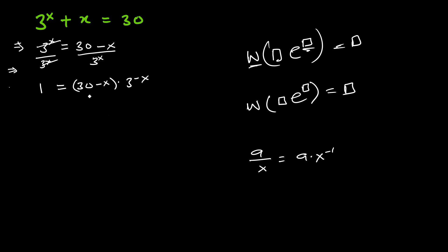Before we introduce the natural log, let's make sure we have matching expressions. We have 30 minus x in one place and negative x in the exponent. To make both match as 30 minus x, we multiply both sides by 3 to the power 30.